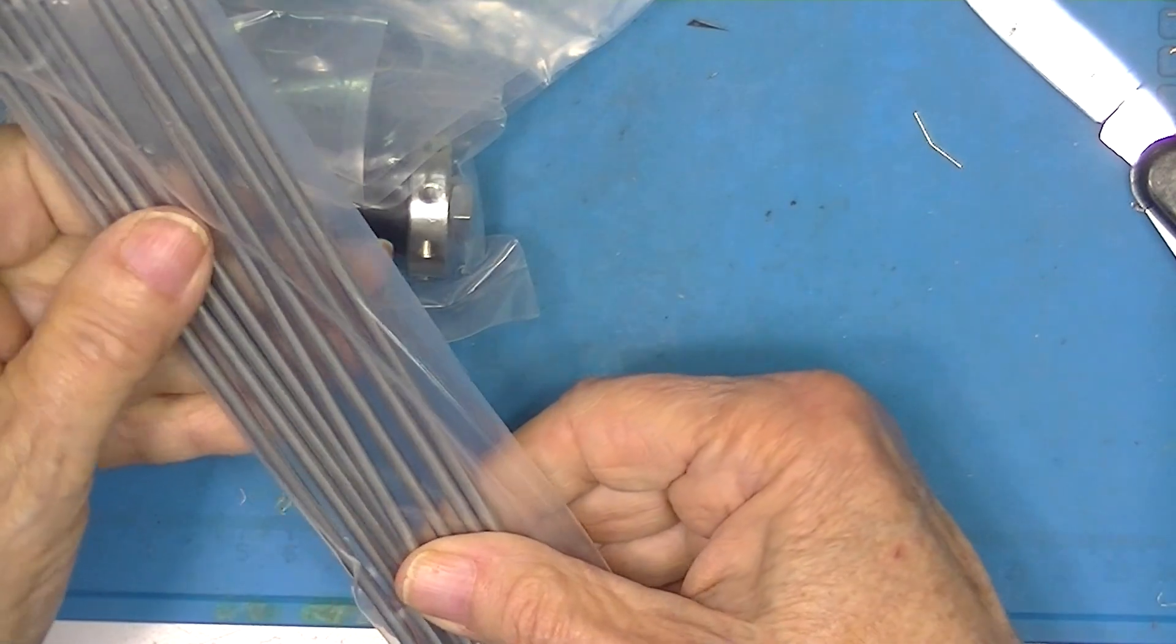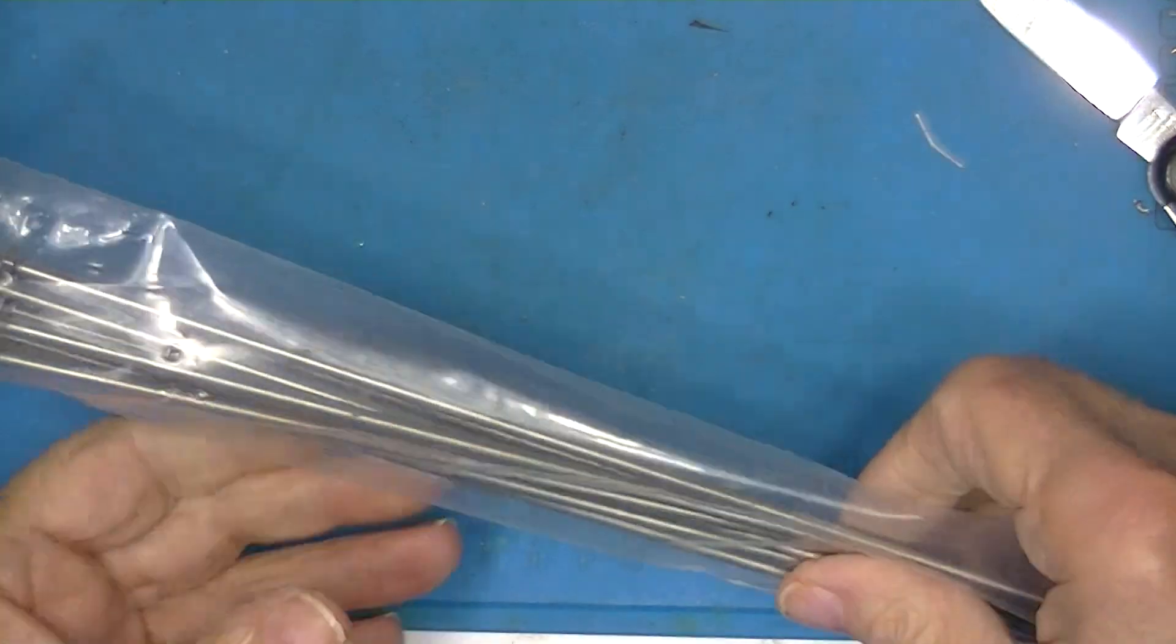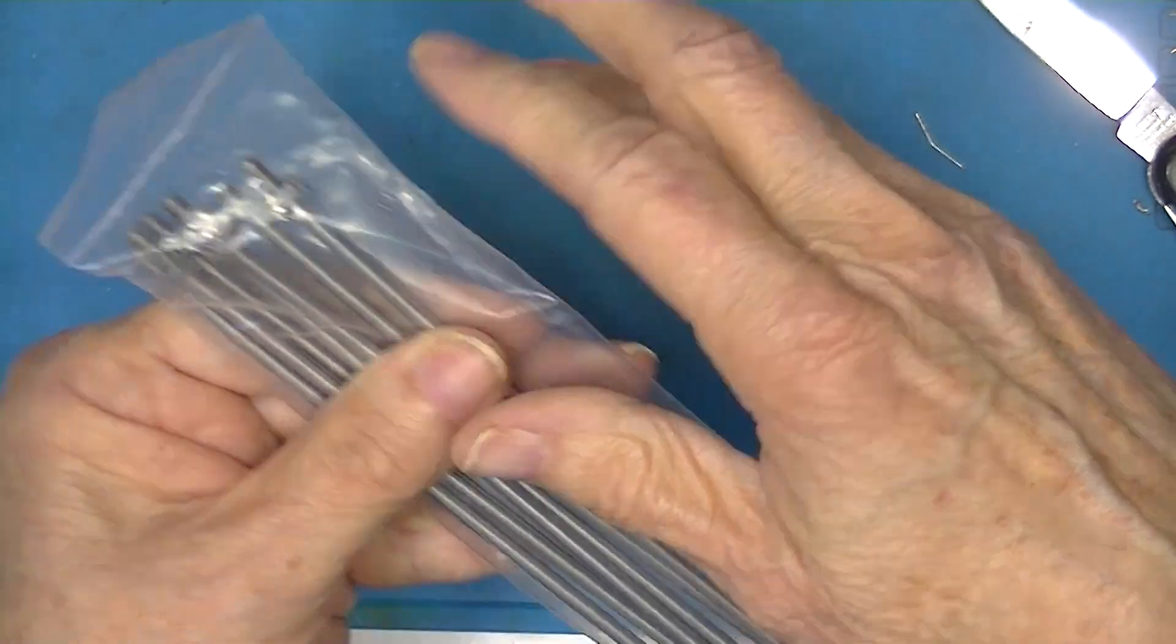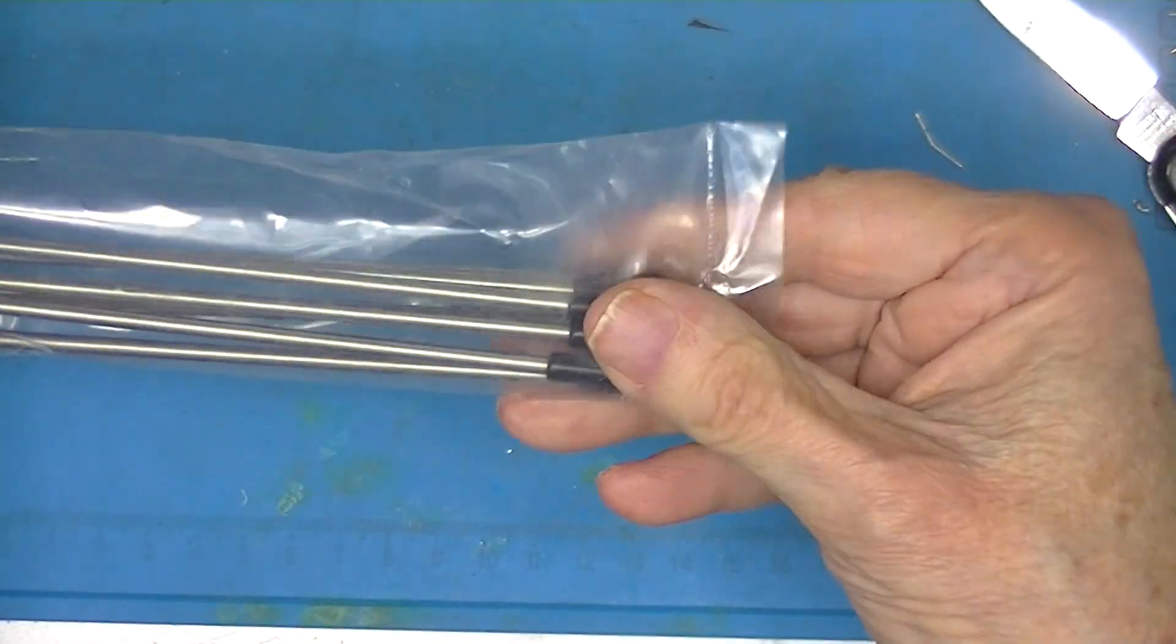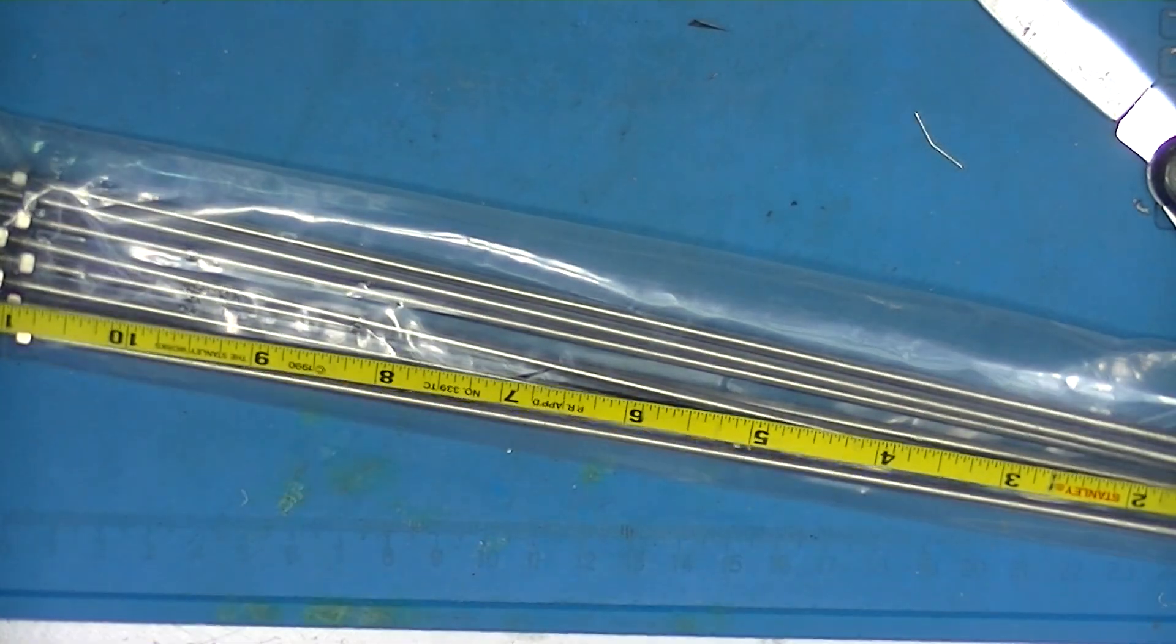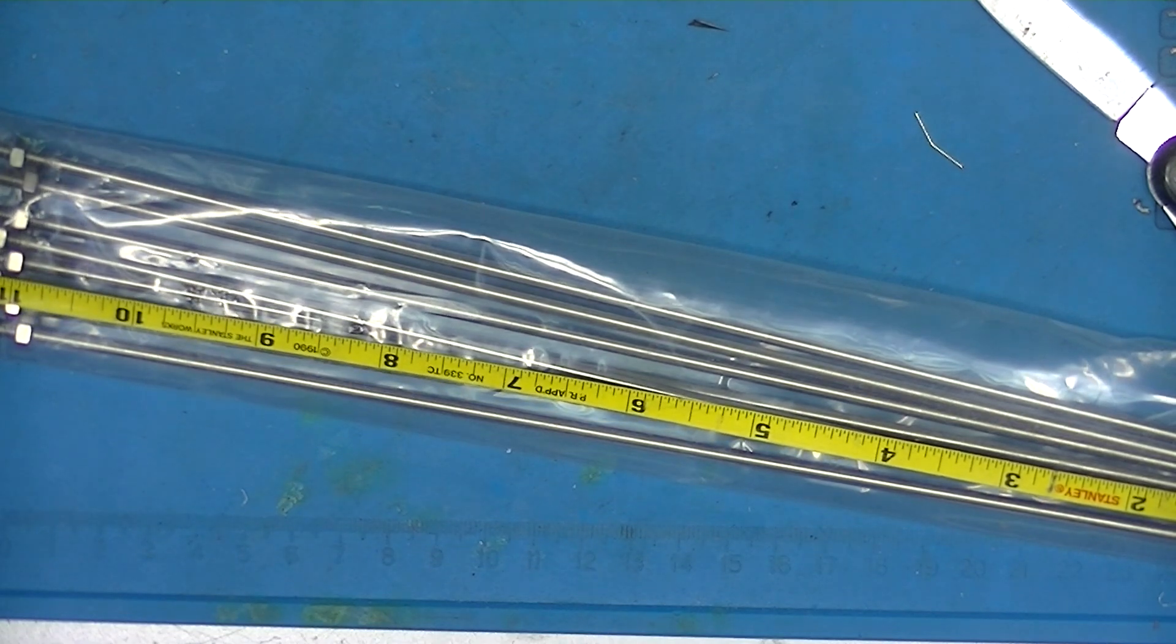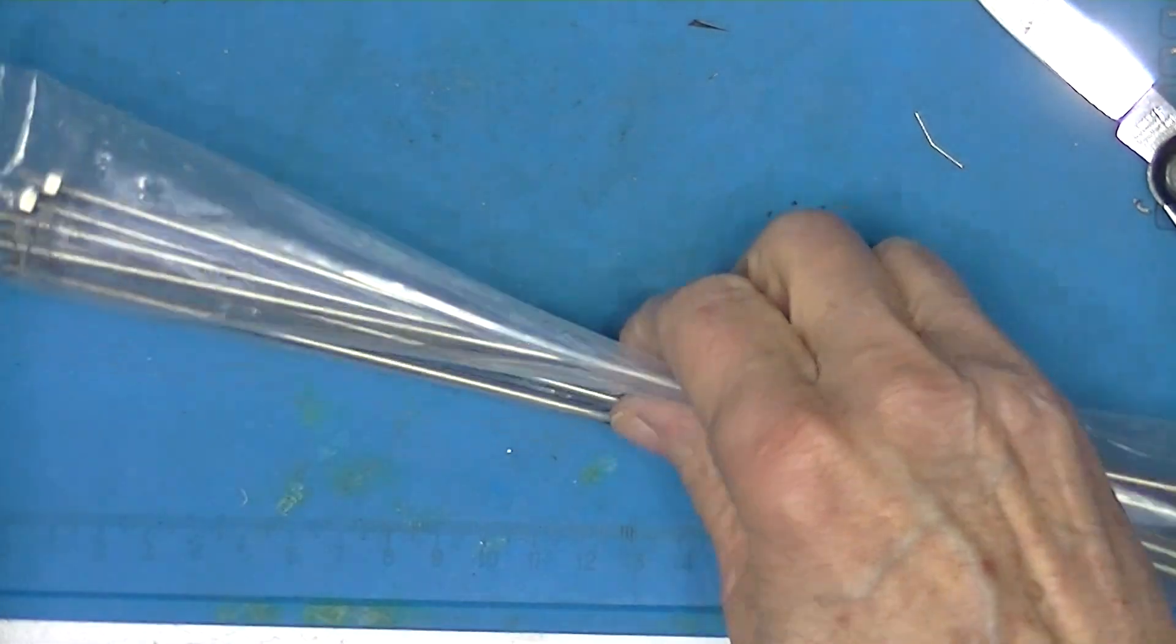And it looks like we have 8 of these rods. Same thing, not quite as many threads, rubber bumpers at one end. And they measure about 11 and a half inches overall length.